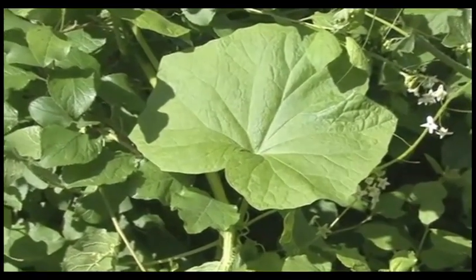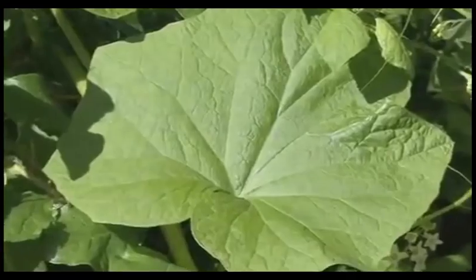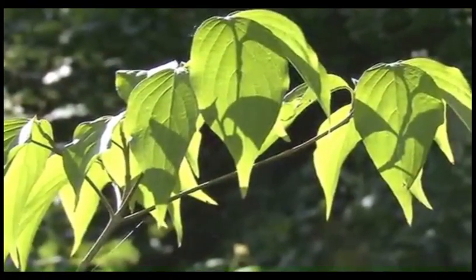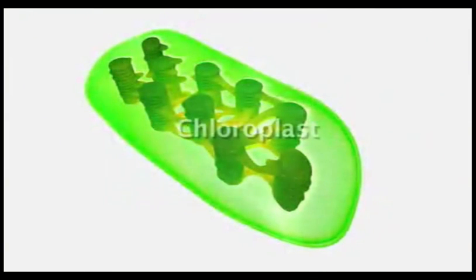Leaves derive their typically greenish to yellowish-green color primarily from the light-absorbing pigment molecules called chlorophyll, which are found in special cellular organelles known as chloroplasts, where the essential process of photosynthesis is carried out.